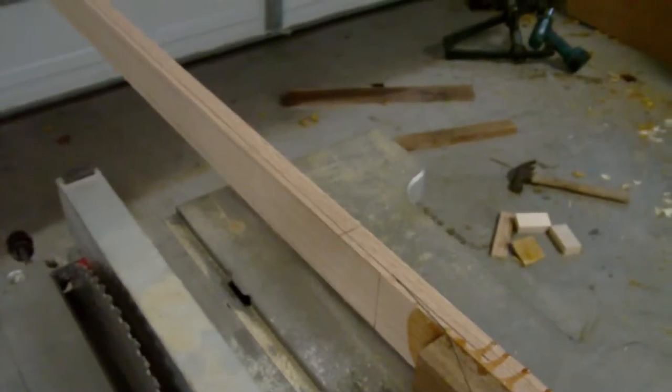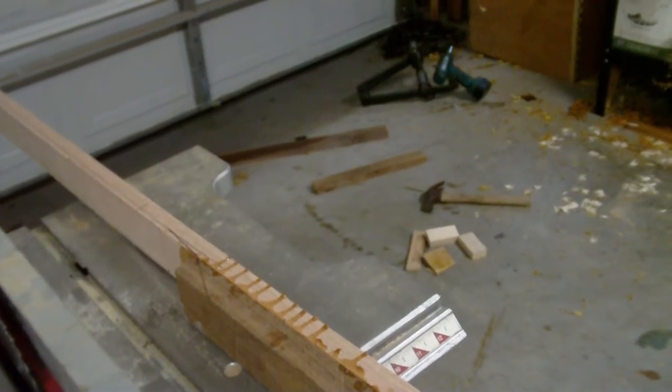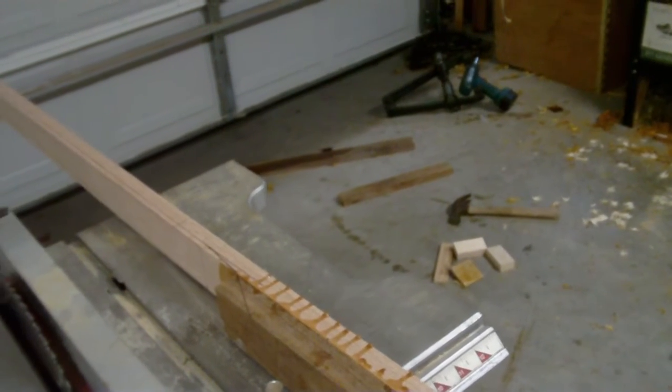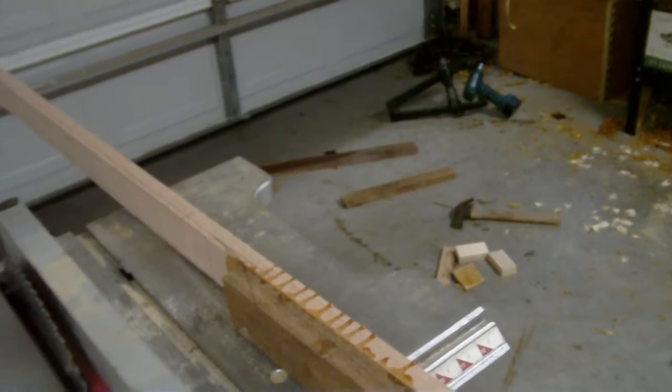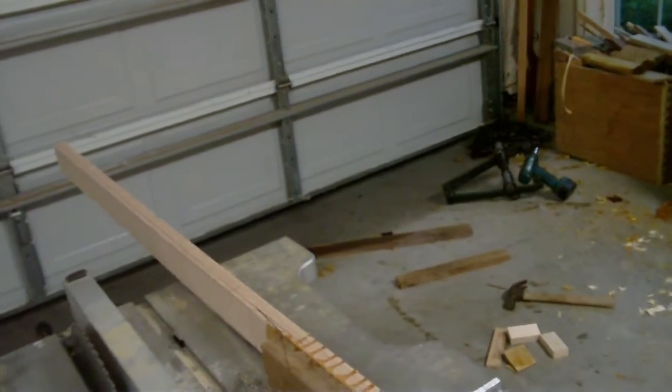Then we're going to clean it up with our bandsaw. Now if you don't have a bandsaw or table saw and you've got your dimensions drawn on there, you can use your block plane or your Surform rasp. It's a lot more work but it can be done pretty easily. Gloves, safety glasses—don't ever forget safety.